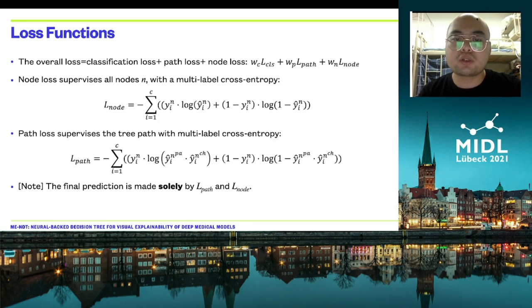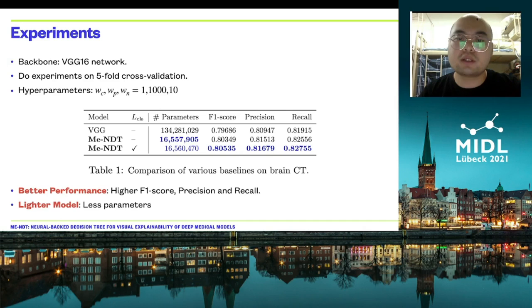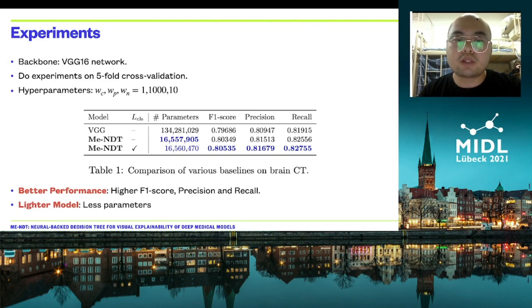We conduct experiments on 2D chest CT datasets using VGGNet and report F1 score, precision, and recall. We observe that MENDT outperforms all the baselines.